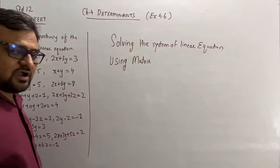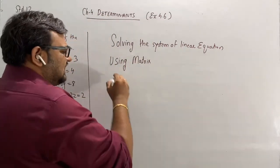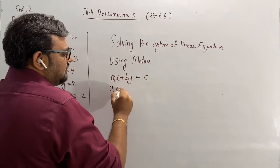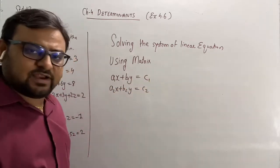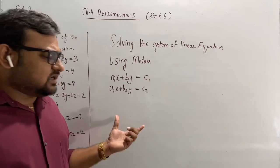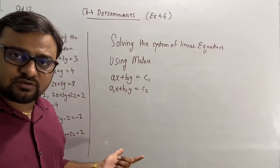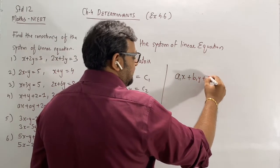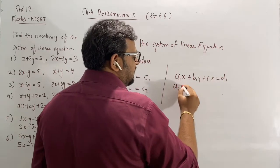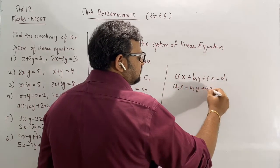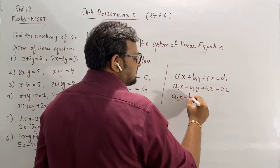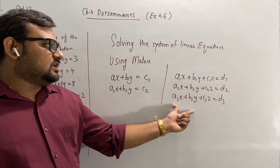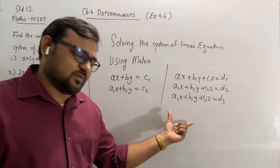Now see, we will be solving linear equations like A1x plus B1y equal to C1, A2x plus B2y equal to C2. This is the linear equation in two variables. Similarly, if there are three variables: A1x plus B1y plus C1z equal to D1, A2x plus B2y plus C2z equal to D2, A3x plus B3y plus C3z equal to D3. These are the linear equations with three variables x, y and z.